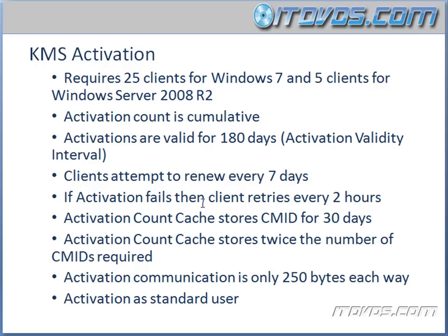The activation count cache stores the CMID — the client machine identification — for 30 days, and it stores twice the number of CMIDs required. So if you have 100 Windows 7 computers that all activate, it only stores 50 of them in the activation count cache. You need at least 25 of those clients to renew their activation within those 30 days. Activation communication is only 250 bytes each way, so it's not going to use much bandwidth, and we can activate as a standard user — no administrative privileges required.